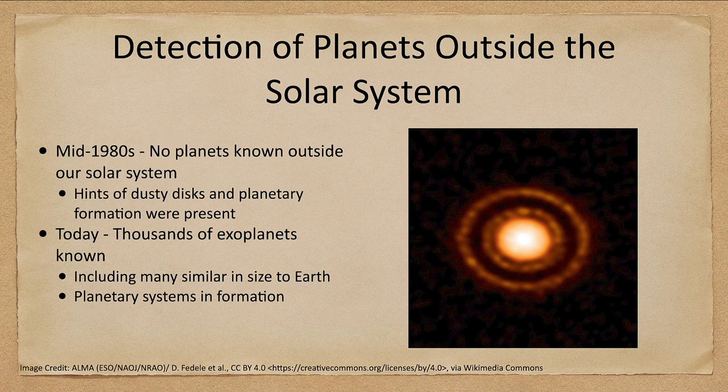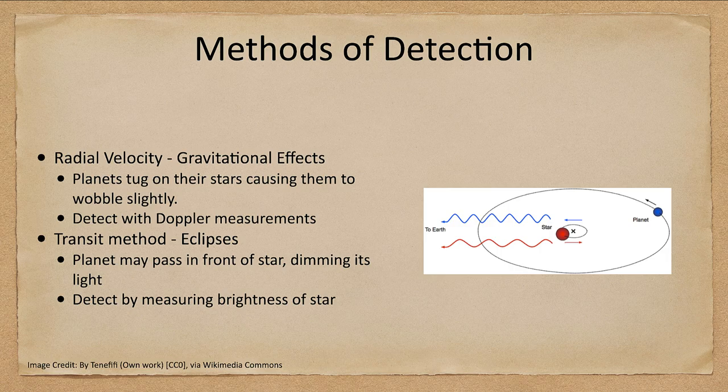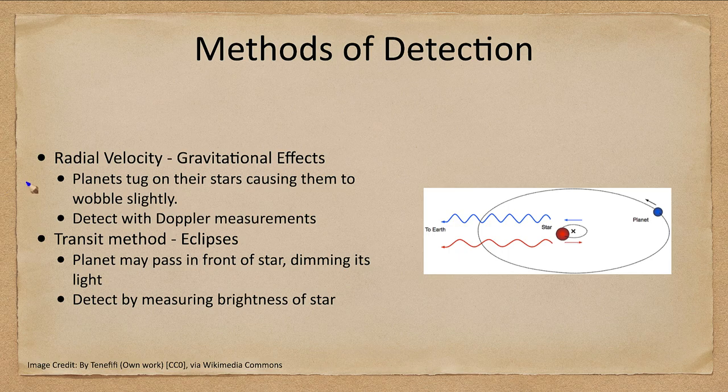Now how do we go about detecting some of these? We're going to look at two methods here and we will come back in another lesson and talk about some more different methods, but these are the two primary ones that have been used to detect most of the planets.